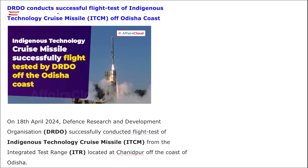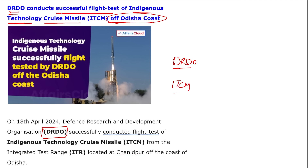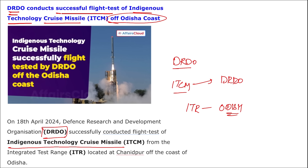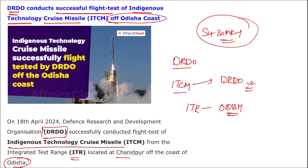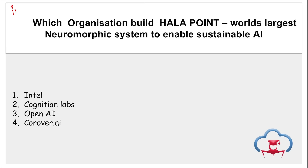DRDO conducted a successful flight test of the Indigenous Technology Cruise Missile (ITCM) off the coast of Odisha. It was tested from the Integrated Test Range (ITR) at Chandipur, Odisha. The ITCM is equipped with advanced avionics and software for better performance, and was developed by DRDO. The flight of the missile was monitored from a Sukhoi-30 MK1 aircraft of the Indian Air Force.